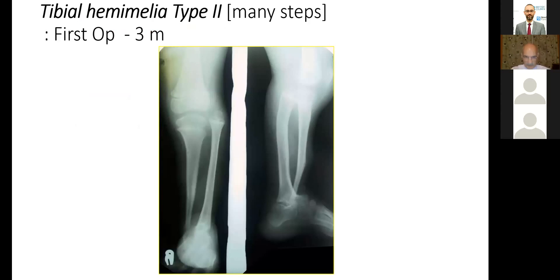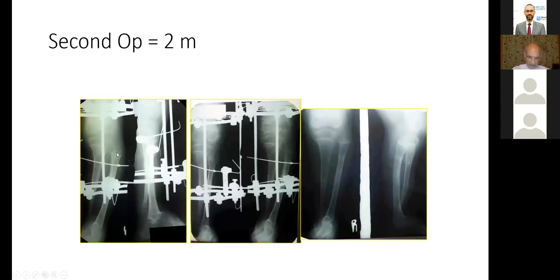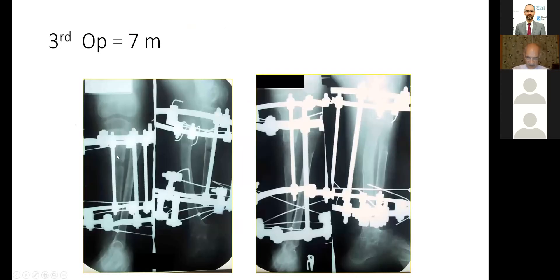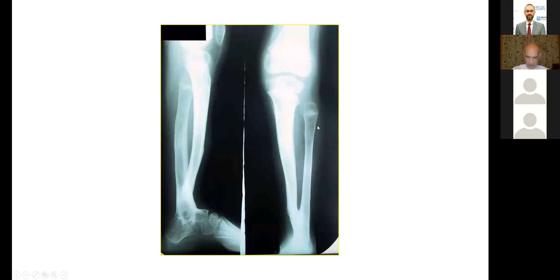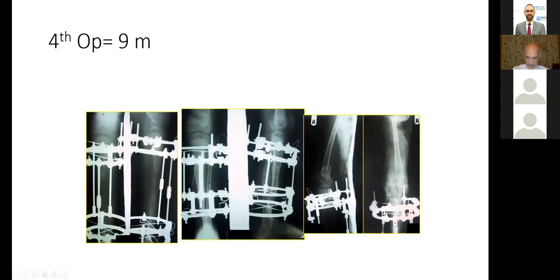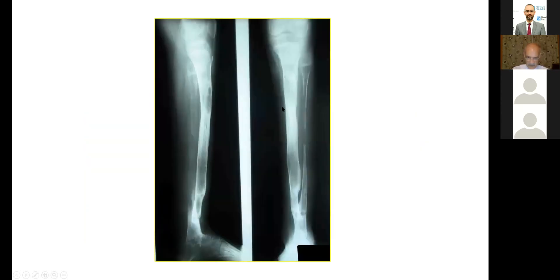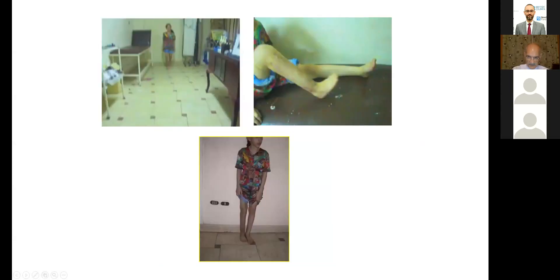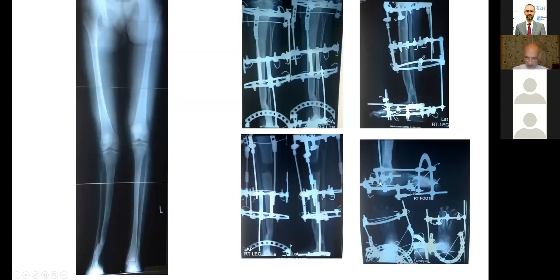This is fibular-tibial hemelia type 2. First operation: distraction to push the fibula down, then osteotomy through the tibia and fibula. This is after lengthening. Then another lengthening — tibial and fibula. Subsequently, correction of the tibial deformity and the fibula deformity with another mid-shaft osteotomy.